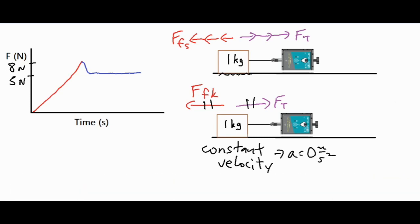To solve for the exact value, the force of friction equals mu — the coefficient of friction, either static or kinetic — times the normal force. For each case the normal force is going to be the same value, so let's draw a free body diagram.